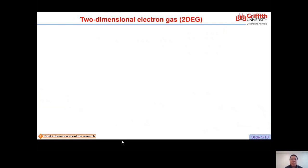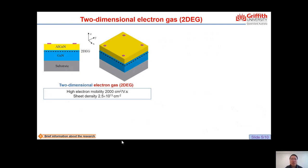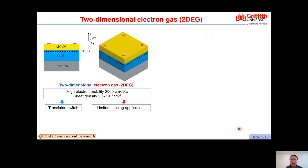This slide gives a brief discussion about the 2-dimensional electron gas, or 2DEG. Consider a heterostructure of AlGaN/GaN on a substrate. The residual stress due to atomic mismatch between layers generates polarization. This polarization creates an electron gas at the interface, the so-called 2DEG. This 2DEG has been widely utilized for transistors or switches. However, the application for sensing is very limited.